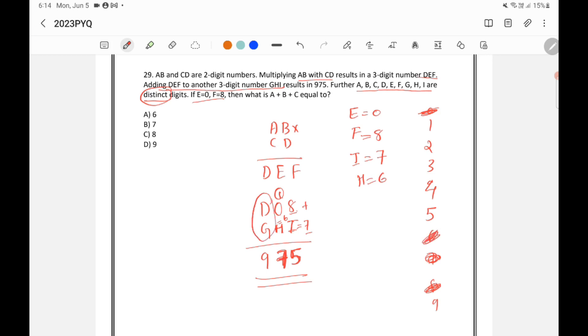Now you have D plus G is equal to 9. So only possibility is 4 and 5 because 4 plus 5 is 9 and that is the only possibility among the remaining digits. So D, G will be 4 or 5. So it will be 4 and 5. So I am cancelling out 4 and 5.